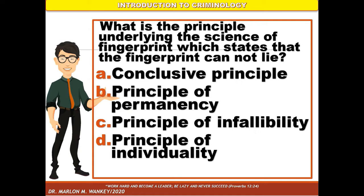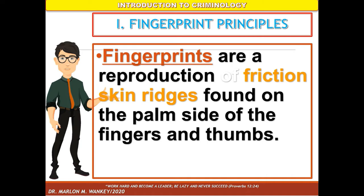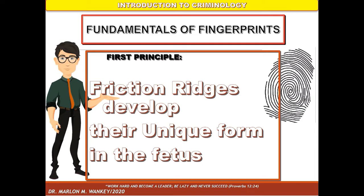Before we can answer the questions, we must know the fingerprint principles. The first principle: friction ridges develop their unique form in the fetus. At approximately three to five months, a person's fingerprints are formed when they are a tiny developing baby in their mother's womb. It is believed that no two fingerprints look alike. They are classified by ridge patterns. If two fingerprints are matched, ridge patterns must be identical in both characteristics and location on the finger.